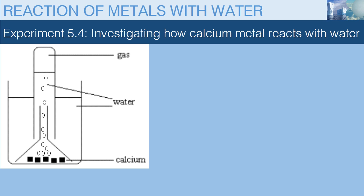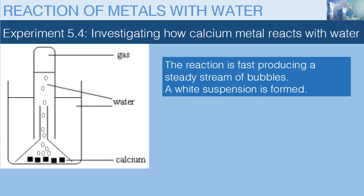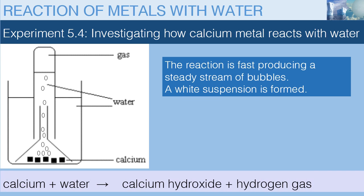The solution formed has a white suspension because calcium hydroxide is slightly soluble in water, so some of it will remain in solid state — that is the white suspension. However, a little of it will dissolve in water to form calcium hydroxide, which we call lime water. This reaction can be represented by the following equation.